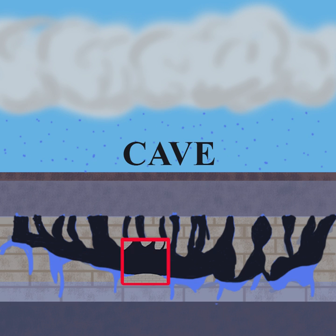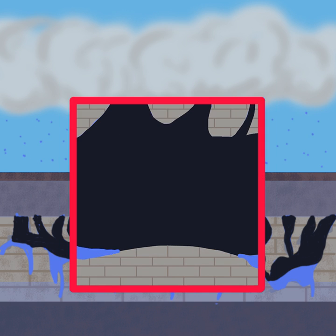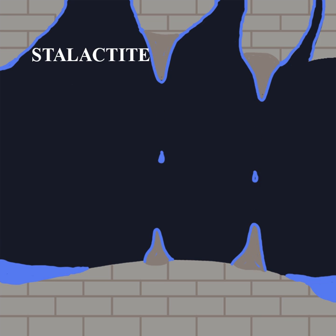After the limestone is dissolved, the water continues to flow and reaches the ceiling of the cave, where it accumulates to the point of breaking surface tension. It then drips down to the cave floor, leaving behind calcium carbonate and other elements. The calcium carbonate builds up over time, forming a stalactite.